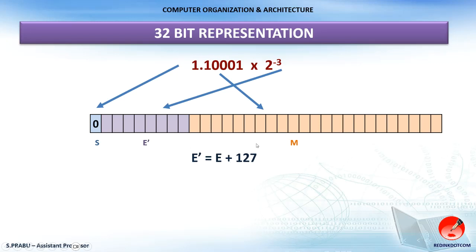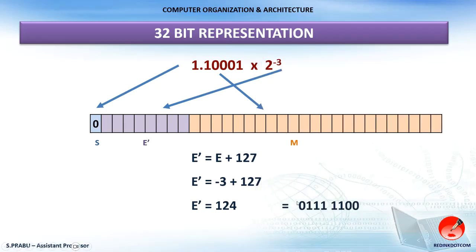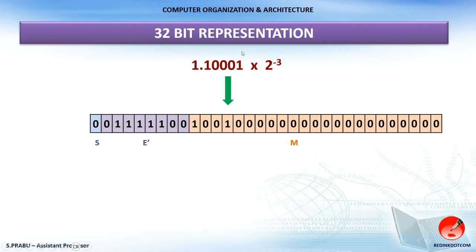The bias value for 32-bit is 127. So E′ = −3 + 127 = 124. Opening the calculator, the binary equivalent of 124 is 01111100. This is written into the 8-bit exponent field. The remaining 23 bits hold the mantissa — the actual fractional binary value is written there, and zeros are padded for the remaining bits. This completes the 32-bit representation of the given fractional binary number.